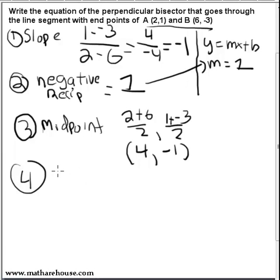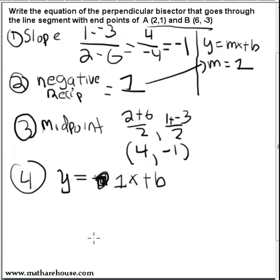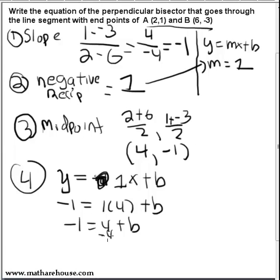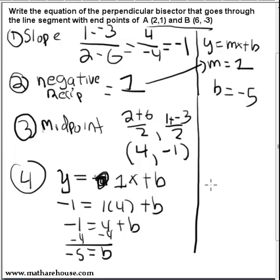We can now substitute this x and y into the equation to solve for b. So: -1 = 1 × 4 + b, which gives -1 = 4 + b. Subtract 4 from both sides and b = -5. The last step is to write the equation out: y = x - 5.